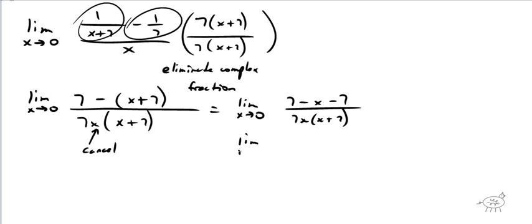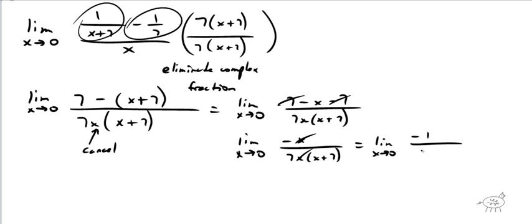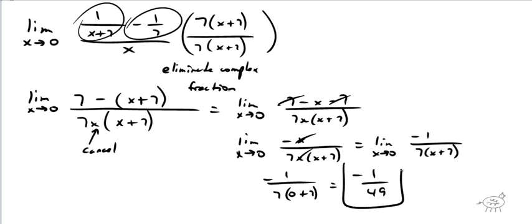Notice I keep writing 'limit' — you don't stop writing limit until you're actually doing the substitution. The sevens cancel out on top, so we have limit as x approaches zero of negative x over seven x times x plus seven. The x's cancel, and now I have limit as x approaches zero of negative one over seven times x plus seven. Now I can plug in zero: it's negative one over seven times zero plus seven, which is negative one over forty-nine. That's my answer.